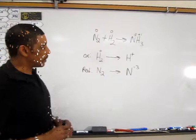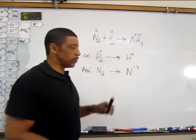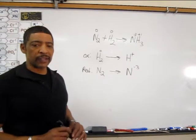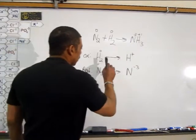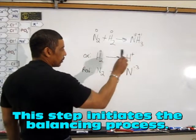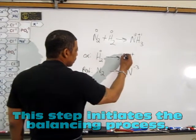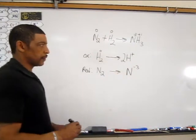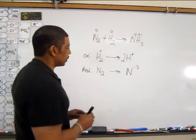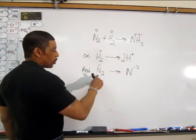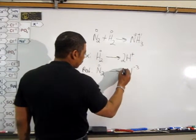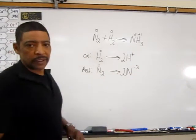At this point, it is obvious that the masses are not balanced in the two half reactions, so the next step in writing half reactions will be to balance the mass. On the left side of this oxidation half reaction, there are two hydrogens; on the right side, there is one. So the hydrogens may be balanced by placing a two in front of the H⁺. In the reduction half reaction, there are two nitrogens on the left side, whereas on the right side there is one, so we place a two in front of the nitrogen.